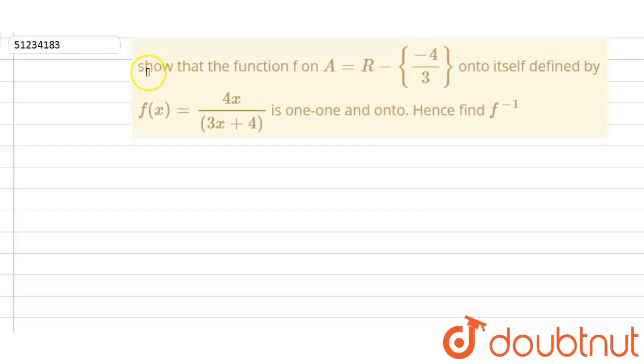Hello friends, welcome back. I hope you are enjoying Doubtnet questions. Show that the function f on R minus {-4/3} onto itself, defined by f(x) = 4x/(3x+4) is one-one and onto, and find f inverse.